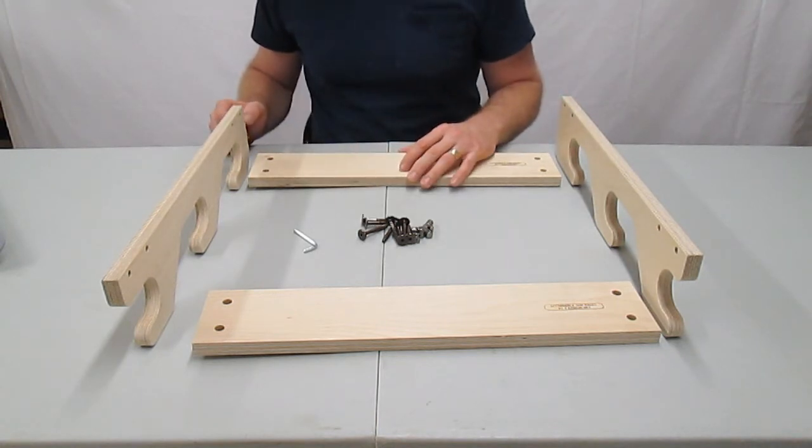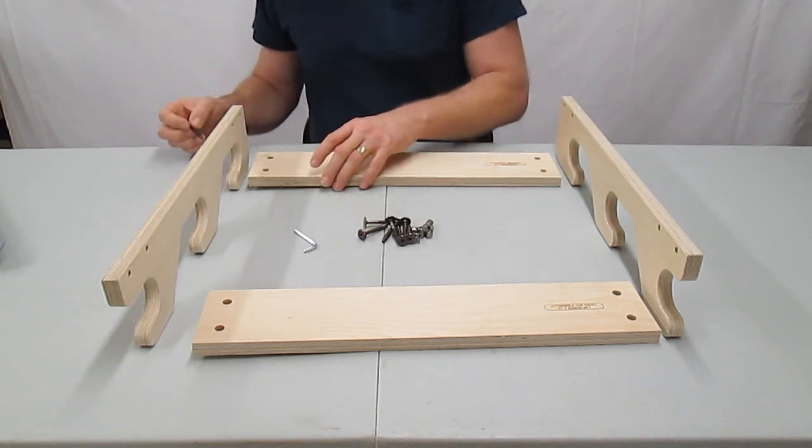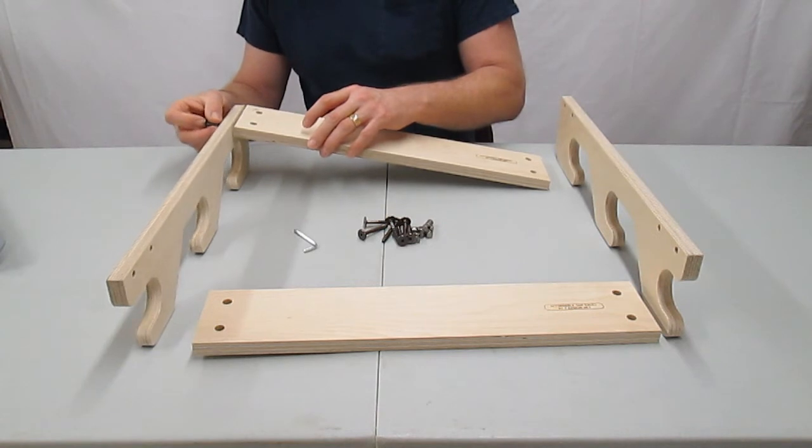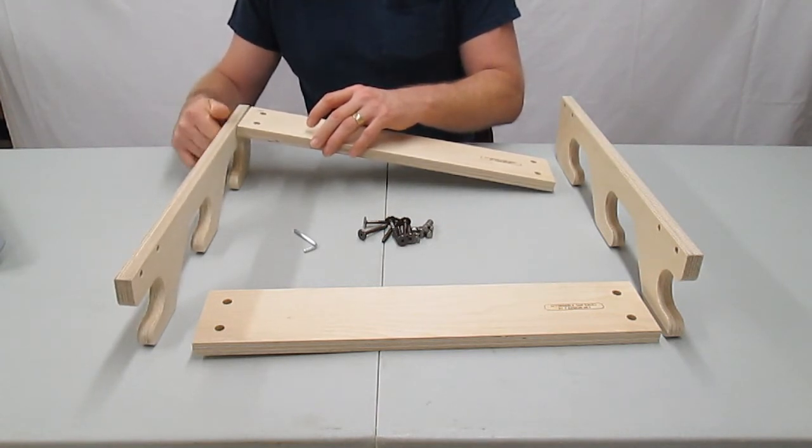Insert two cross dowels into a pair of holes at one end of one of the cross braces. Hold the cross brace up to the bracket and insert two connector bolts and thread them into the cross dowels leaving them slightly loose.